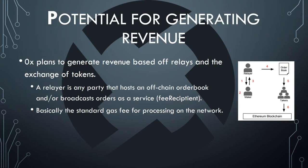This is a super confusing coin. If you're still confused, just keep doing your research — maybe go over that YouTube video and really concentrate on what he's saying. The potential for generating revenue: 0x plans to generate it based off relayers and the exchange of tokens. A relayer is any party that hosts an off-chain order book and broadcasts orders as a service — basically the standard gas fee for processing the network.